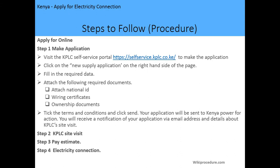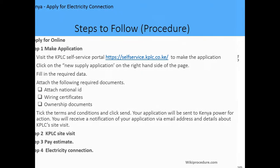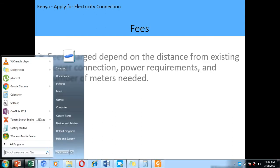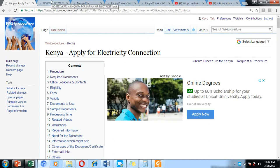The online application is done by first making the application online. Steps three to four remain the same — after making the application, you will get a KPLC site visit. They will notify you when they will come, then give you an estimate for you to pay. After paying, you present the payment receipt to KPLC offices, and your electricity connection will be established, usually within 75 days.